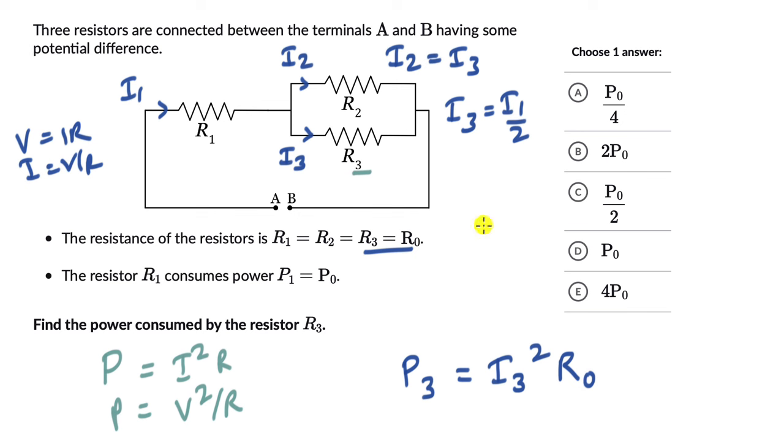Okay so instead of I3 let's write I1 by 2. So this becomes I1 square by 4 into R0.